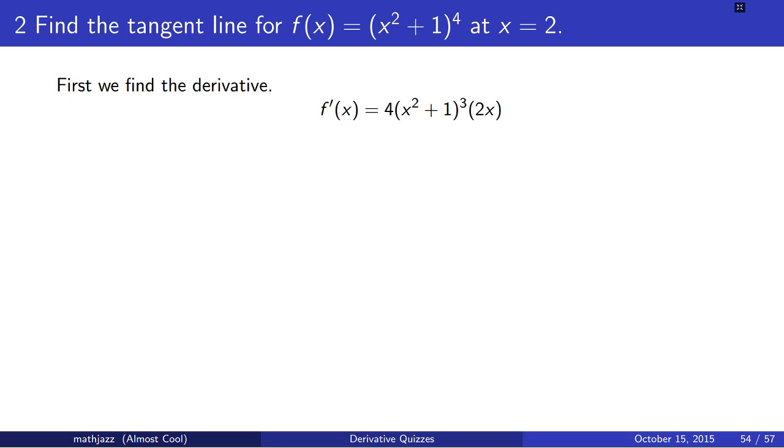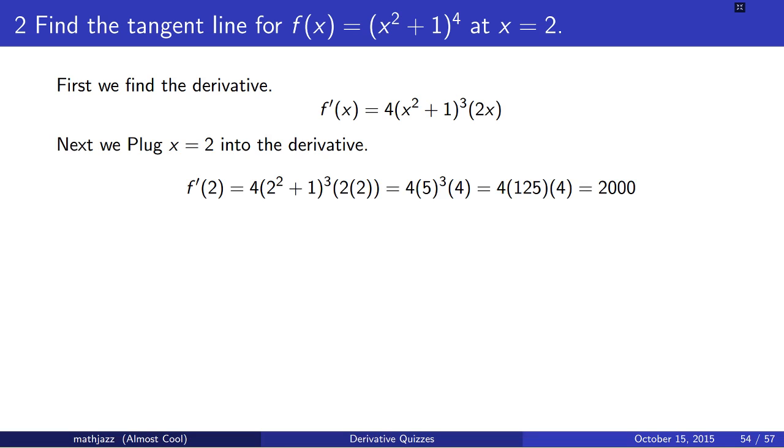I've skipped directly to writing out the derivative. We plug in the point 2, and we get 2,000 as the slope of our tangent line.